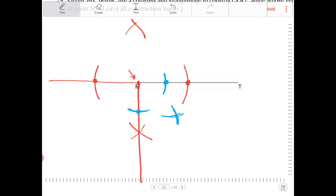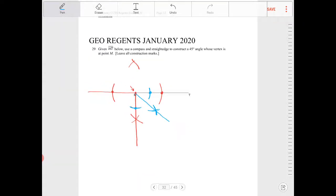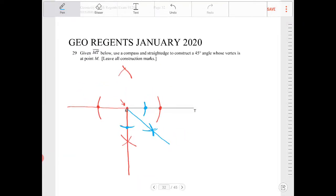This point right now, to point M, is going to form your angle bisector. So by doing this, you will have formed a 45 degree angle.